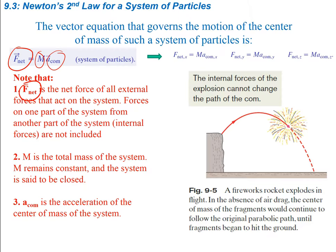The total mass big M is constant and the system is closed. The A_com is the acceleration of the center of mass of the system. For example, the internal forces of an explosion cannot change the path of its center of mass. A fireworks rocket explodes in flight, and in the absence of air drag, the center of mass of the fragments would continue to follow the original parabolic path until the fragments hit the ground, because the explosion causes only internal forces.